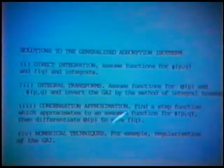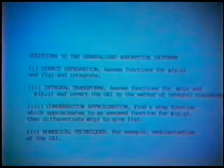The other approach is integral transforms, where you assume a function for the overall isotherm and the local isotherm and invert the GAI — we are not using that technique here. The third method is the condensation approximation, where you assume that the local isotherm is a step function — more accurately, you find a step function which approximates the assumed local isotherm — which makes it simple to differentiate the overall isotherm to give a site energy distribution function. And finally, there are various numerical techniques, and the one we're using is regularization.